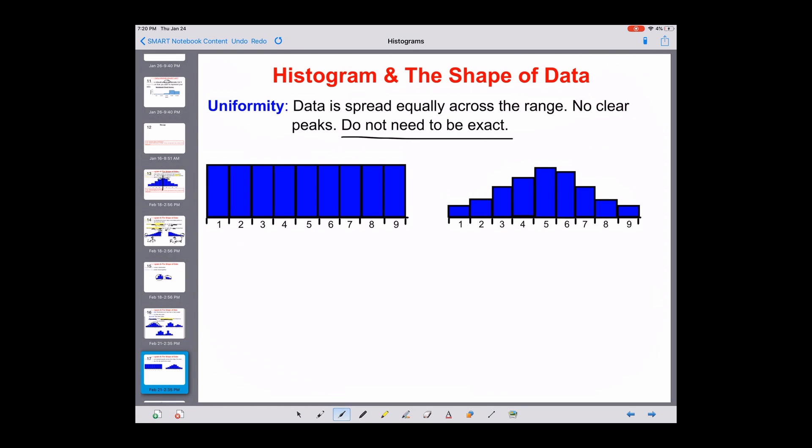Uniformity. Uniformity does not need to be exact, so I'm going to say that first and foremost. Again, just kind of like the bell shape or the symmetric doesn't need to be exact. Data that is spread out equally across the range, so from the minimum to the maximum, then there's no clear peaks. This is like the perfect example of uniformity. But if all of these top pieces right here were just a little bit off but it was basically the same over the top, we could still call it uniform. This right here is our bell shape. This is not uniform. This one is uniform.